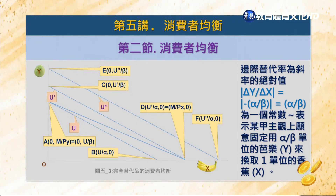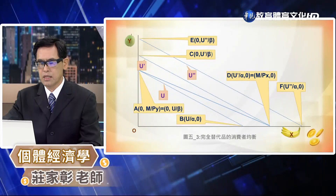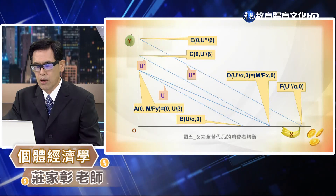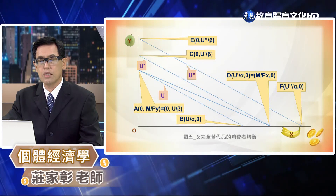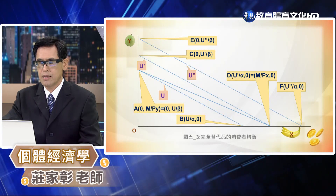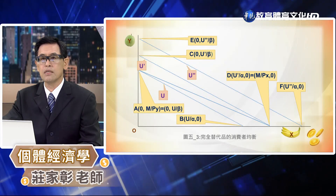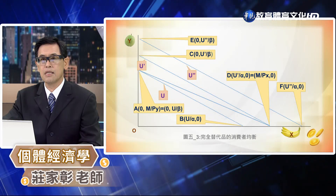以下我們將繼續介紹另外兩種無差異曲線的消費者均衡，分別是完全替代品跟完全互補品。完全替代品的兩種商品之間是可以完全替代的，消費者並不在乎香蕉或是巴勒的數量哪一個比較多，他只在乎的是總和的數量的多寡。因此在這種情況下，這個無異曲線的邊際替代率是固定的，所以它的無異曲線並沒有凸面向原點，而是一條固定斜率的直線，如圖5-3所示。